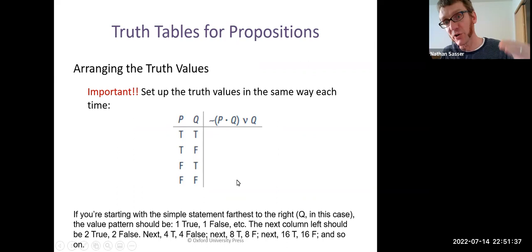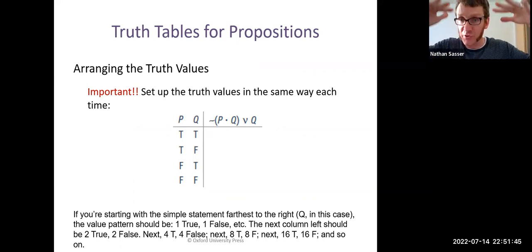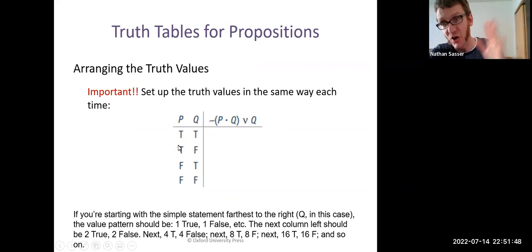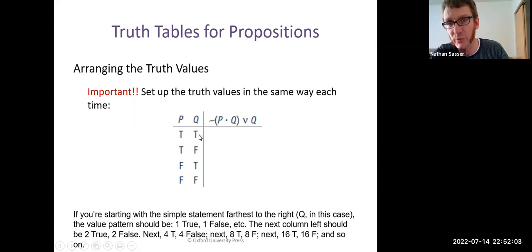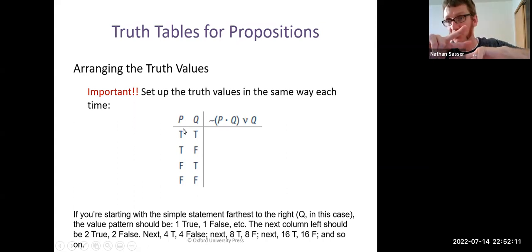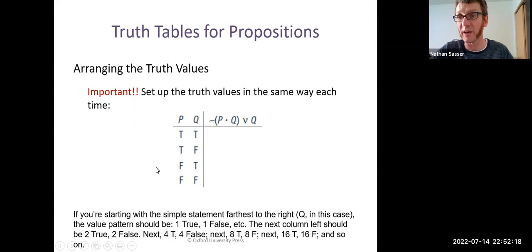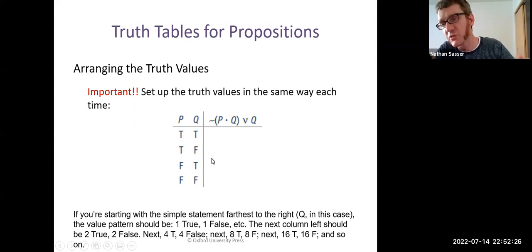You know from the formula you're going to need four lines. The first thing you want to do is lay out the truth value combinations on the left-hand side. Start with the column closest to the middle bar — the Q column in this case — and go every other line: true, false, true, false. Then move to the next column and double that: two trues, two falses, two trues, two falses. If there were a third column farthest to the left, you'd do four trues, four falses. That pattern gives you every possible combination of truth values for P and Q.